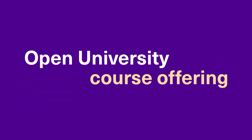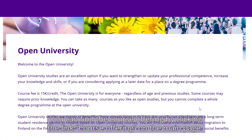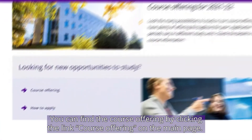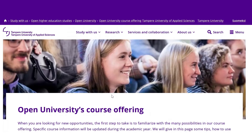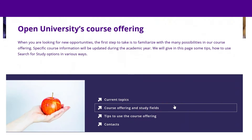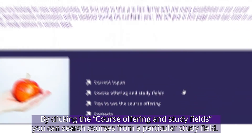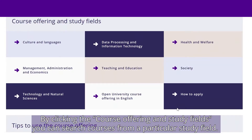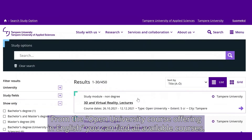You can find the course offering by clicking the link Course Offering on the main page. By clicking Course Offering and Study fields, you can search courses from a particular study field. From the Open University Course Offering in English, you can find all available courses.